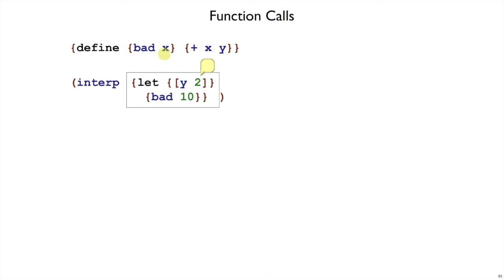Suppose we had bad defined as take an x and add x to y. But this is a free y. This y is a bad y. It should be a free variable error when we get here. And let's suppose that we call bad inside of a let binding where we let y equal 2. But this y is unrelated to that y. This y is only supposed to be visible in the body.